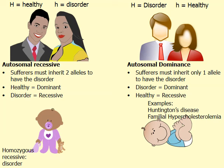The only way to actually be healthy when an autosomal dominant disorder is in the family is to inherit a recessive healthy allele from both the dad and the mom. Homozygous recessive is the only genotype that would give you a healthy phenotype.